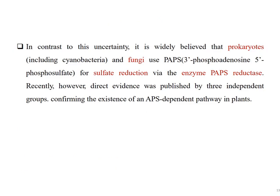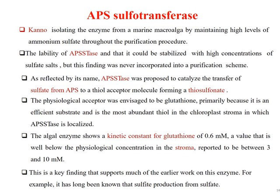In contrast, it is widely believed that prokaryotes including cyanobacteria and fungi use PAPS (3'-phosphoadenosine-5'-phosphosulfate) for sulfate reduction via the enzyme PAPS reductase. Recently, however, direct evidence was published by three independent groups confirming the existence of an APS-dependent pathway in plants. APS sulfotransferase was isolated from a marine microalgae by maintaining high levels of ammonium sulfate throughout the purification procedure, demonstrating the lability of APS-stase and that it could be stabilized with high concentrations of sulfate salts, though this finding was never incorporated into standard purification schemes.